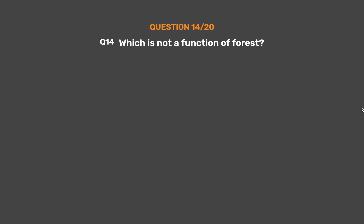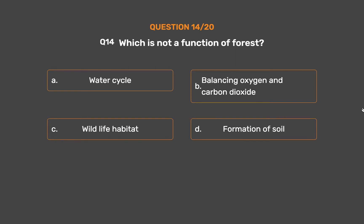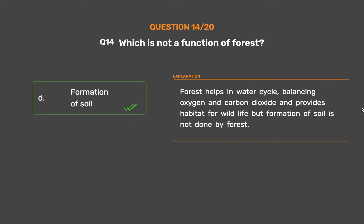Question number 14. Which is not a function of forest? Option A: Water cycle. Option B: Balancing oxygen and carbon dioxide. Option C: Wildlife habitat. Option D: Formation of soil. The correct answer is Option D: Formation of soil. Forest helps in water cycle, balancing oxygen and carbon dioxide, and provides habitat for wildlife, but formation of soil is not done by forest.